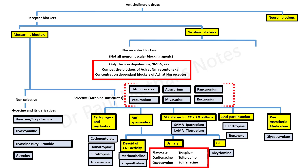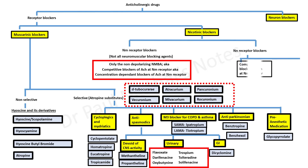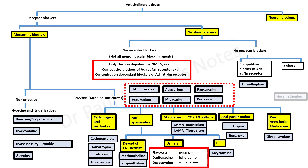NN blockers may be classified into competitive blockers of acetylcholine at the NN receptor — the example being trimethaphan — and others like hexamethonium.